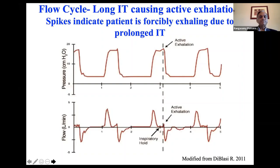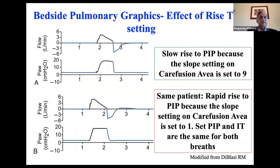Flow cycling and flow termination: here is inspiratory flow ending but exhalation hasn't started because inspiratory time is too long — the baby is trying to exhale, seen as beaks on the pressure curve. If you use flow cycling, as soon as the baby's inspiration ends, the baby can exhale. Avoid active exhalation — that's why flow cycling is important. On the slow rise time setting (slope 9 on CareFusion), pressure builds slowly and maintains during inspiratory time; on rapid rise time, pressure goes up quickly. Use slow rise time for babies — don't use rapid rise time.